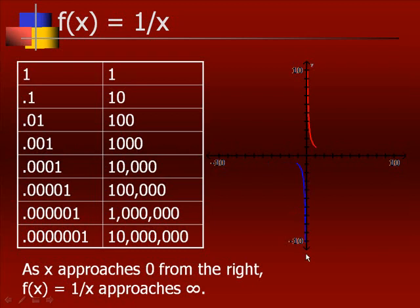Now let's do the positive ones: 1, 0.1, 0.01. As these x values get closer to zero from the right, these y values get larger and larger. So as we get closer to zero from the right, this function approaches positive infinity.